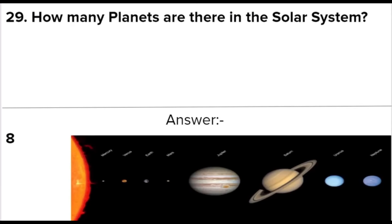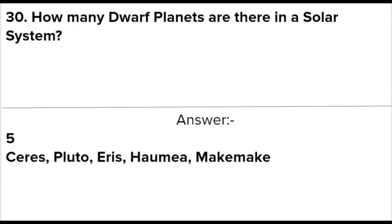Next question: How many dwarf planets are there in the solar system? Answer: 5. They include Ceres, Pluto, Eris, Haumea, and Makemake.